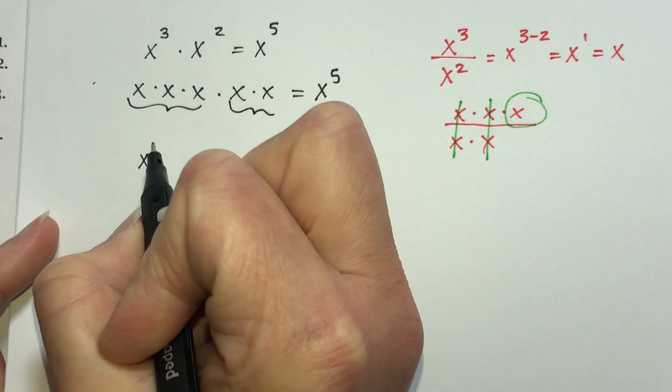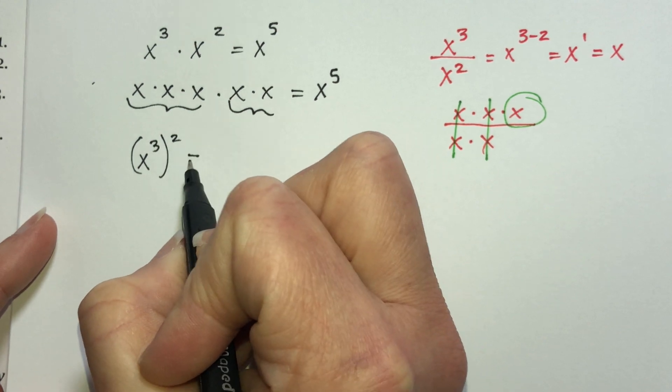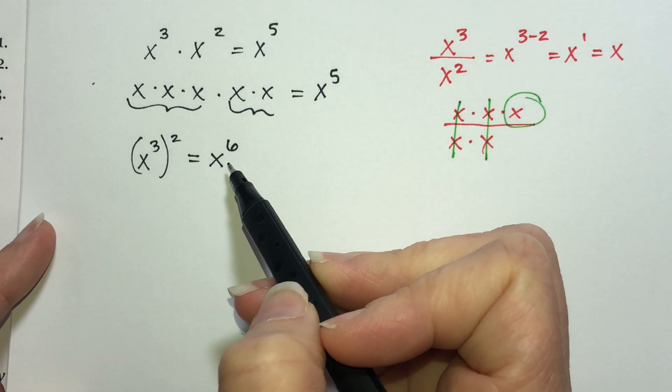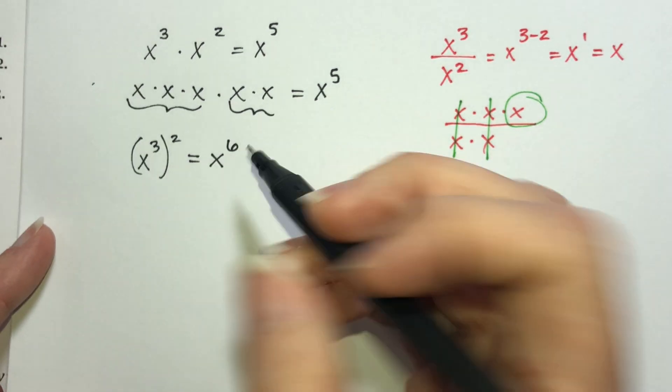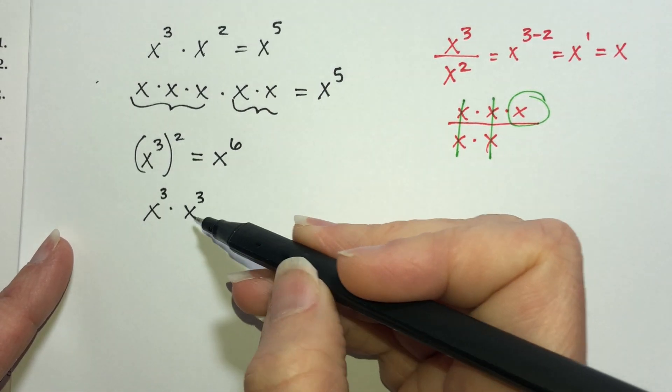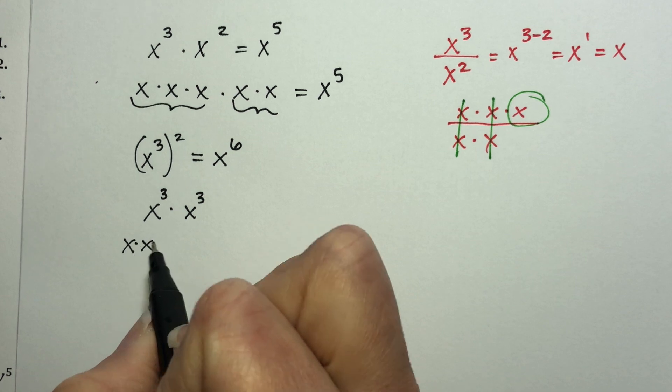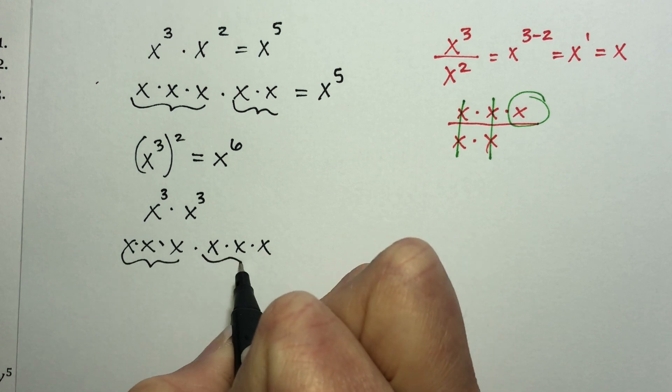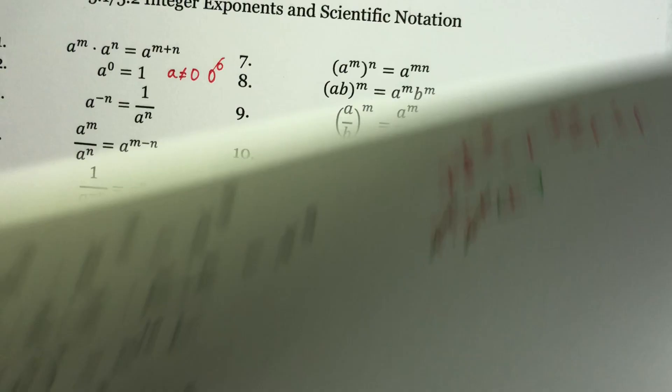So let's say I had x cubed squared. Our property says we should multiply those exponents together, and we would get x to the sixth. Here we got x to the fifth. This says we should get x to the sixth. Well, let's just think about the meaning of exponents. Something squared means that something times itself, which would be x times x. Oh, x cubed times x cubed. We can then follow the property we used up here. Three plus three is six. But if you still don't remember that, x times x times x. That's x cubed times another x cubed. And then you count up how many x's you have multiplied together, and you get the sixth.